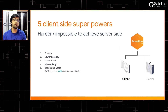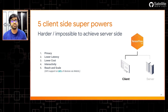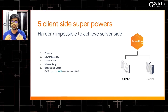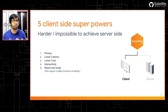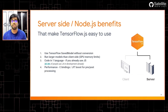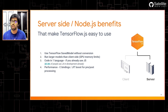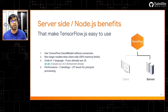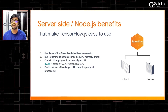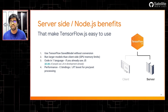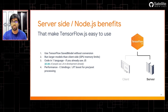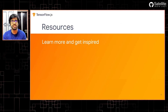There are five superpowers you get on the client side: privacy, lower latency because there's no dedicated server, lower cost, interactivity, and offline capability. On the server side, you get the power of JavaScript's just-in-time compiler, you can write everything in one language, and of course you can run models much more powerful than the client side because of the dedicated CPU and GPU power that comes with Node.js.